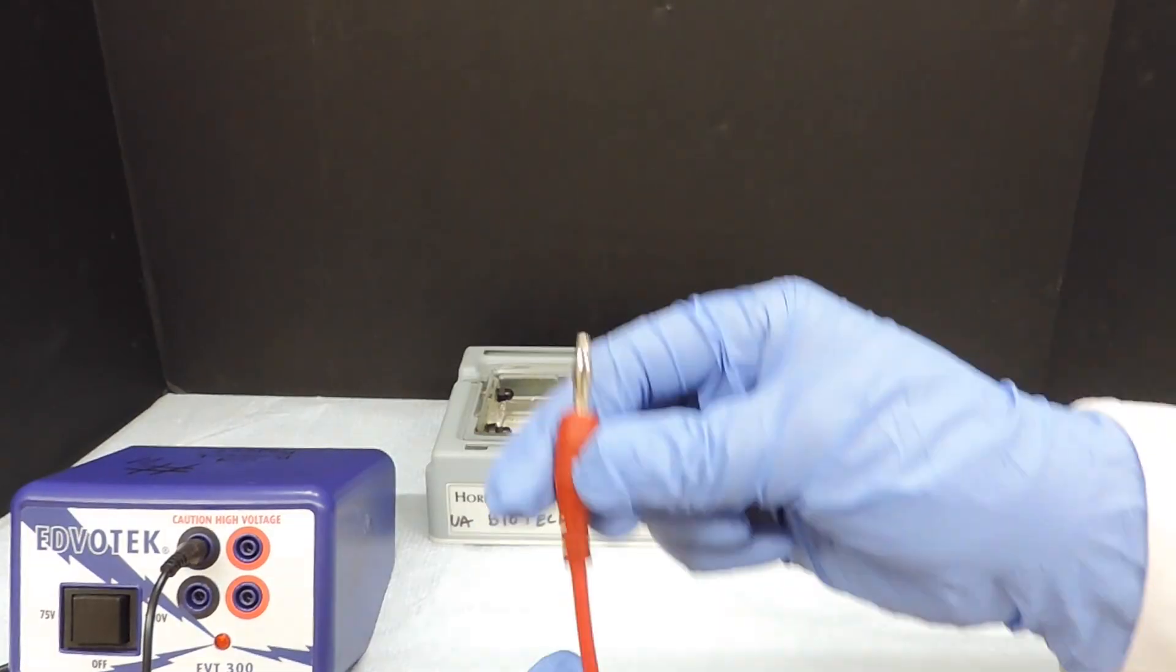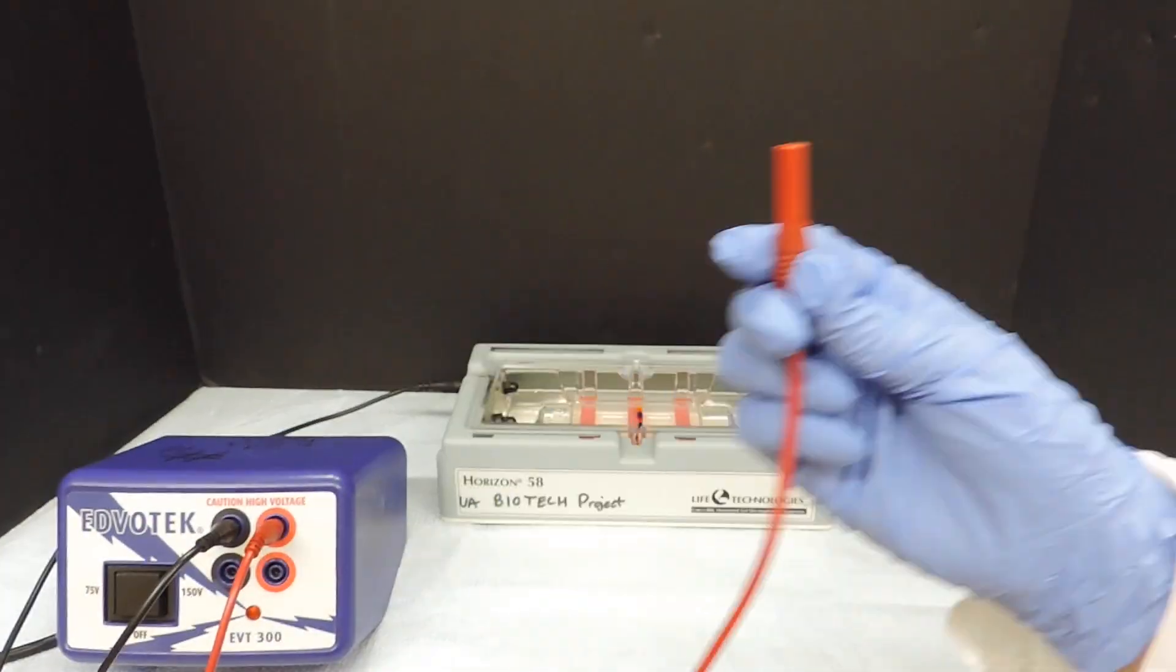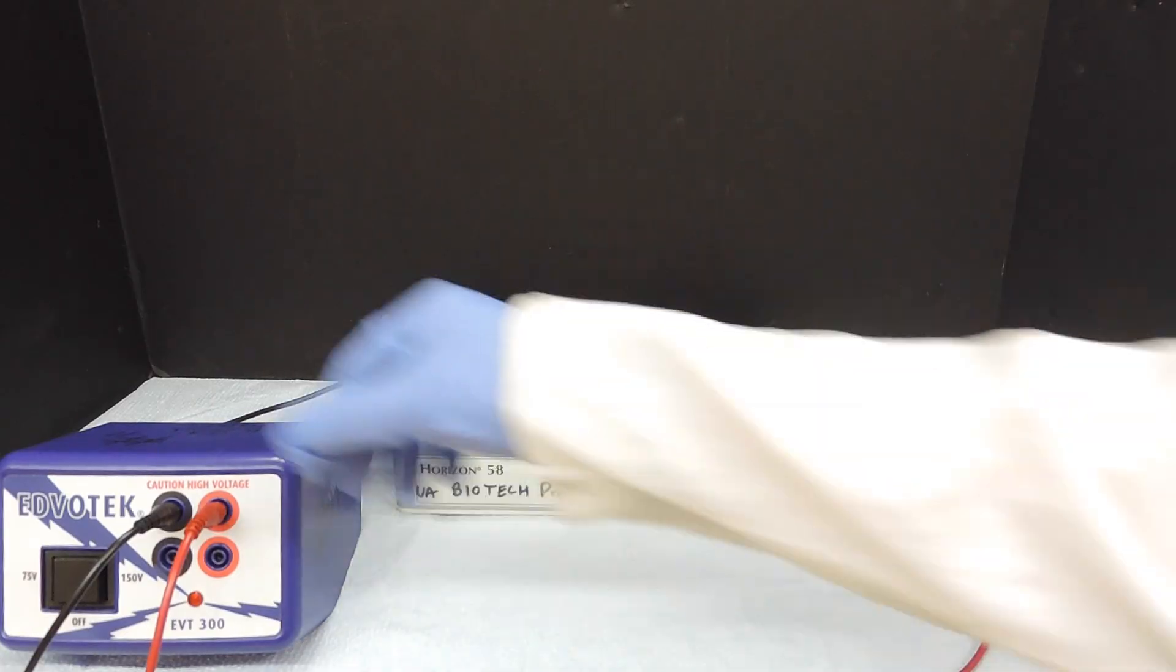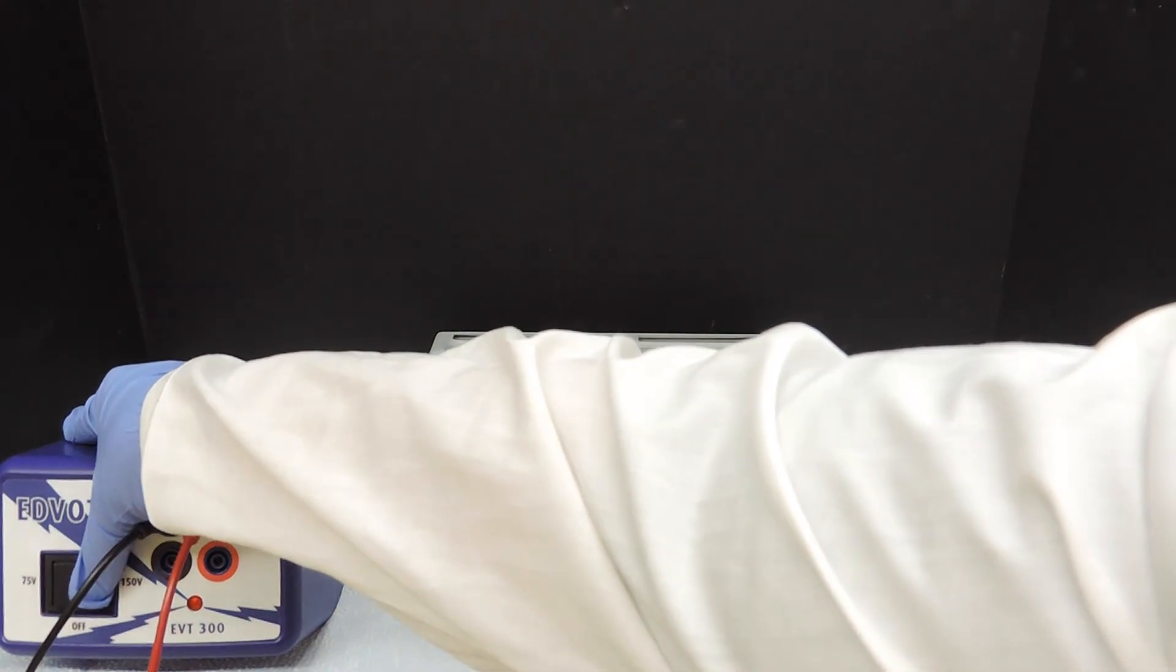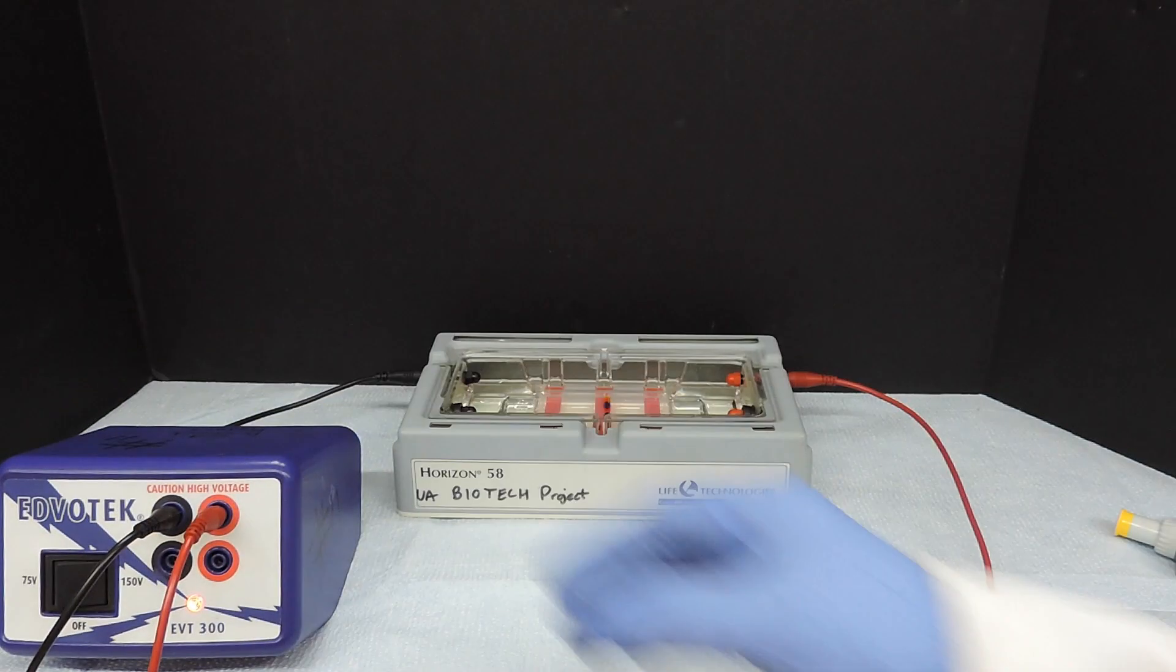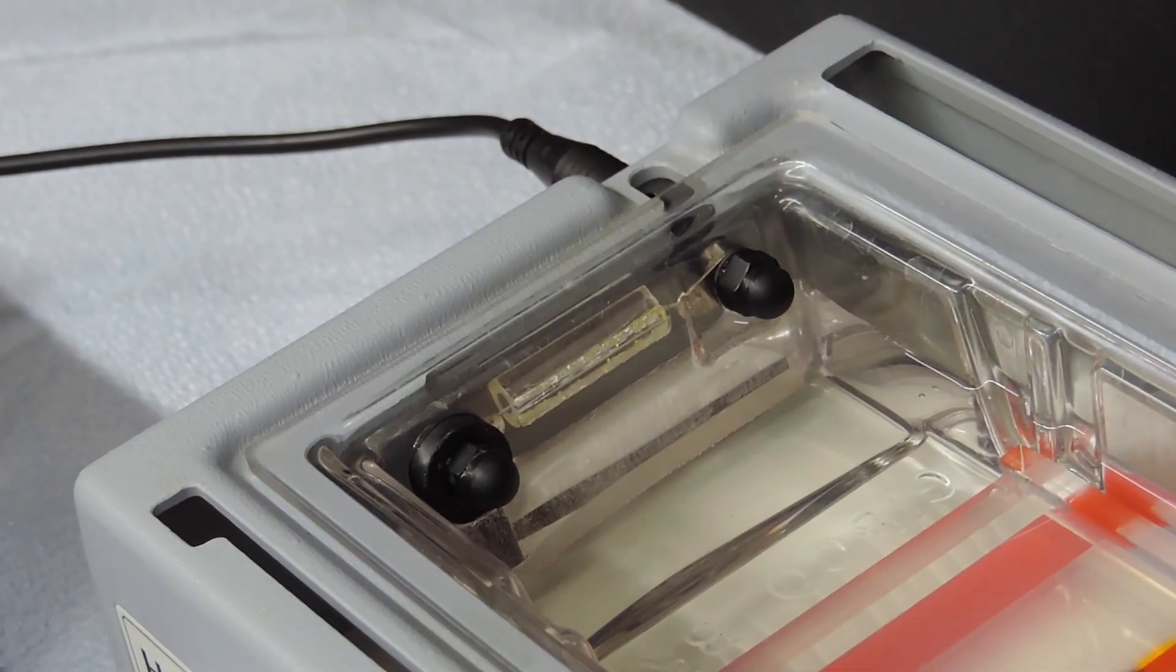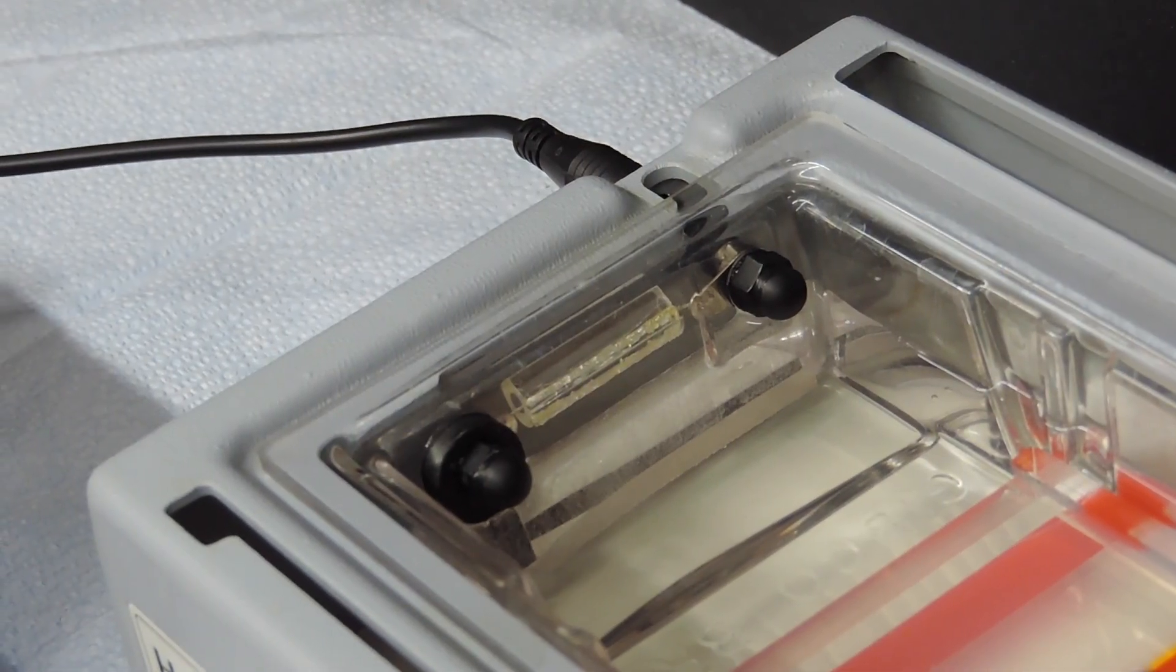Plug into a power source. Black to black and red to red. Turn on the power source. Allow for the electric current to run for 10 minutes at 150 volts. You should immediately notice bubbles at both electrodes.